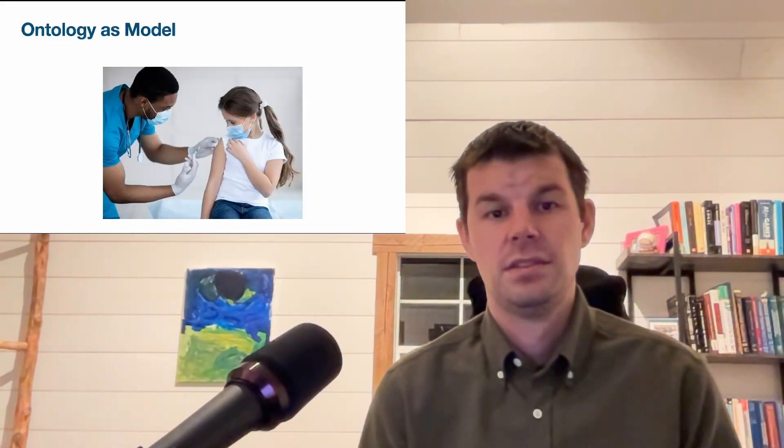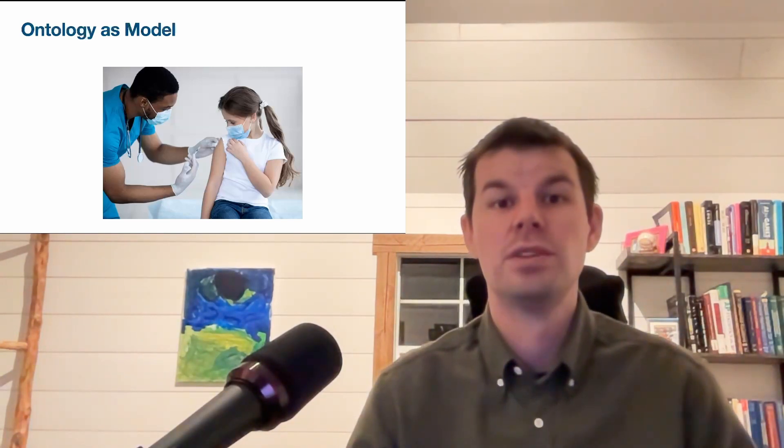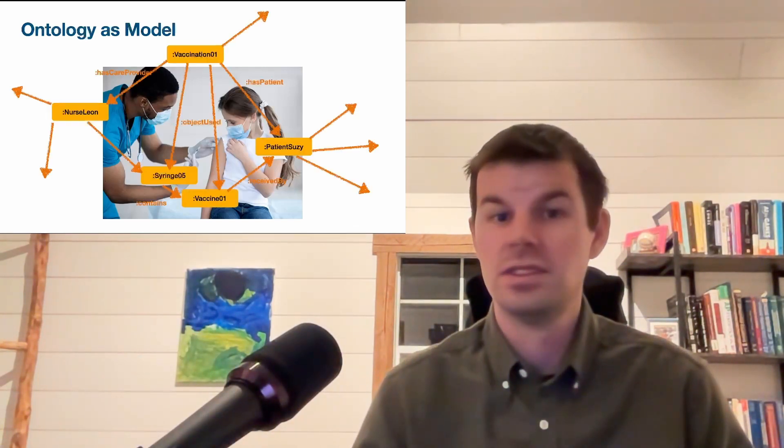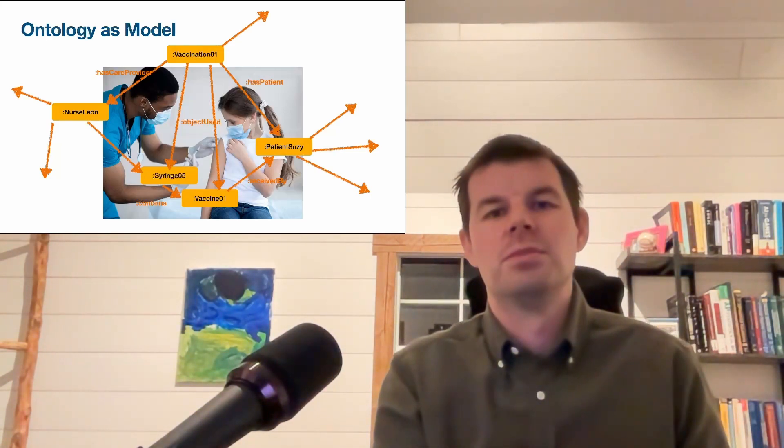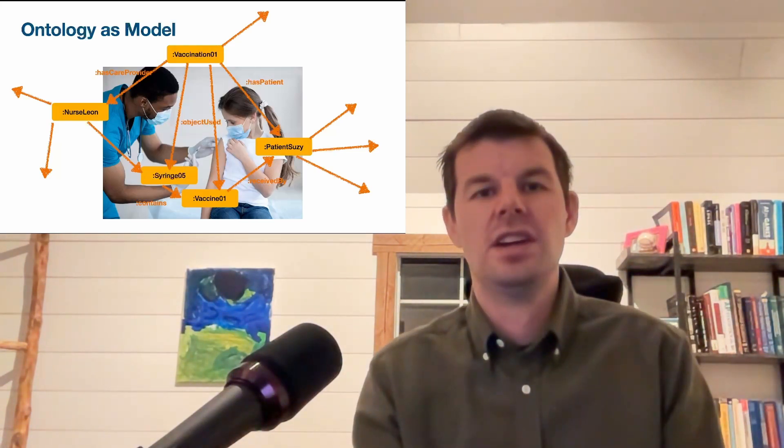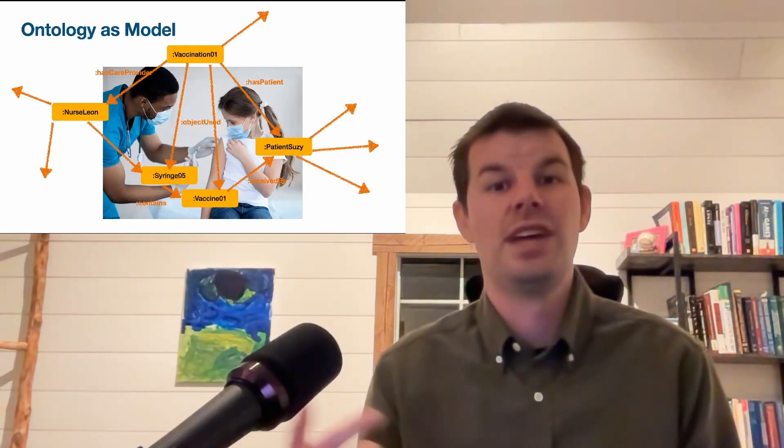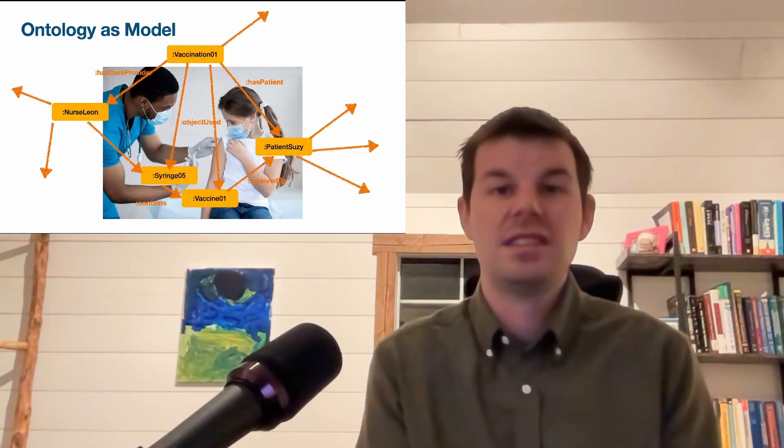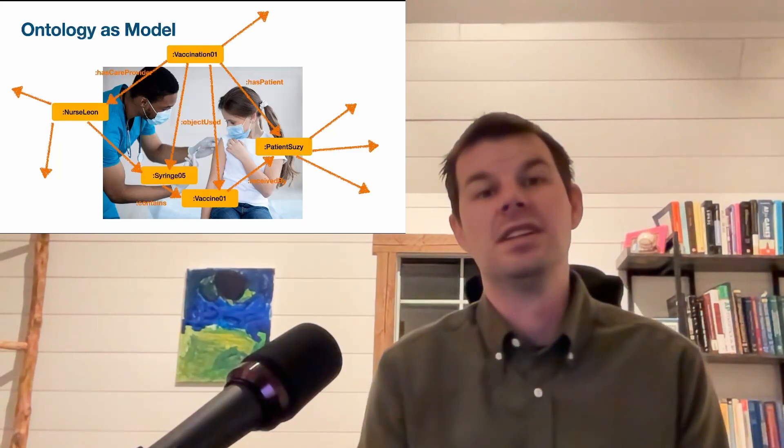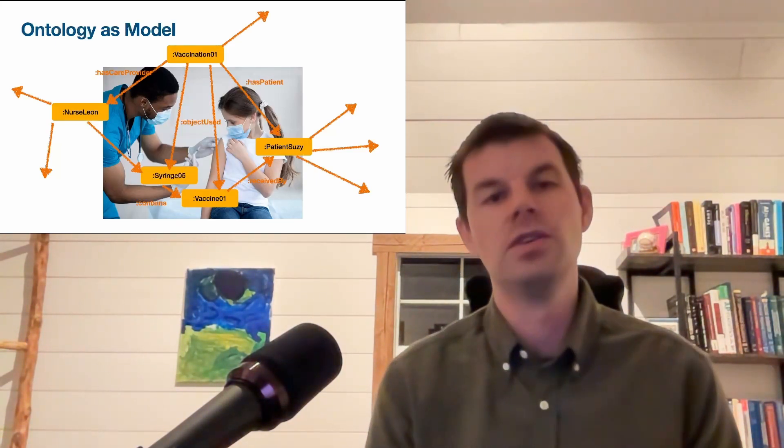A good ontology is a model. Imagine we have some real-world situation - someone's getting a vaccine. We want to express this in our ontology. We can sort of overlay the graph, the mathematical structure that we thought of from the last one, on top of this picture. What's going on? It's a vaccination. There are role players in this vaccination. We have our patient Susie, we have our nurse Leon. He's holding Syringe 5, which contains the vaccine. We know that vaccine is being administered to patient Susie, and all of these things are sort of sub-parts of this single overarching event.